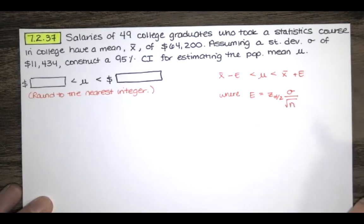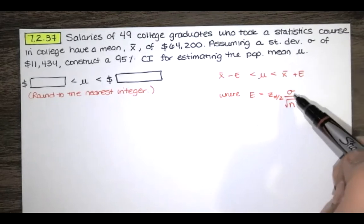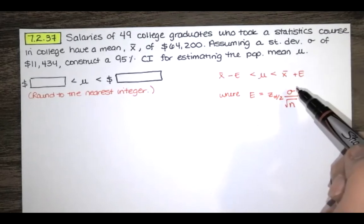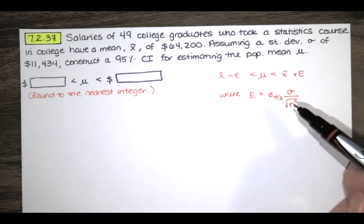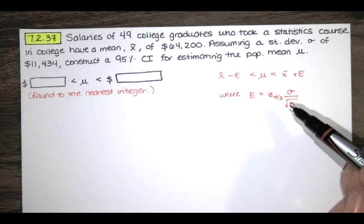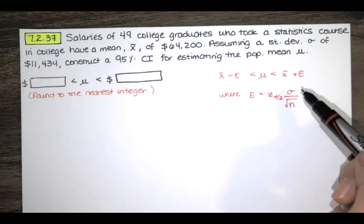Notice that this looks very similar to the formula we had for the error before. But in the other case, when we didn't have the population standard deviation, we had the sample standard deviation right here. And we had to use the student T distribution for our critical T value.